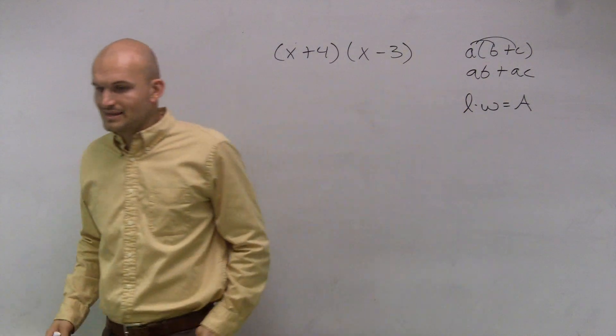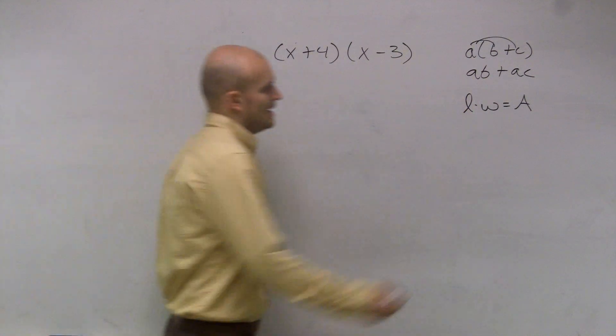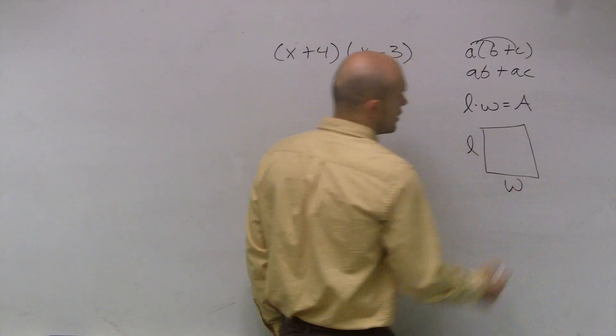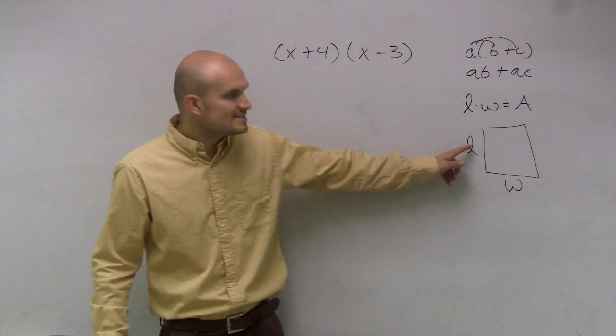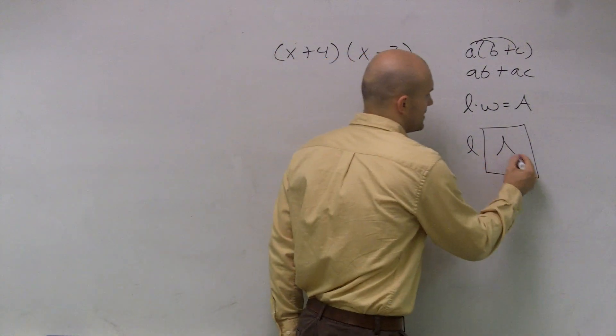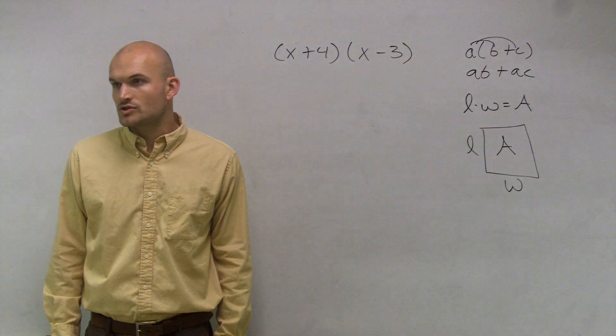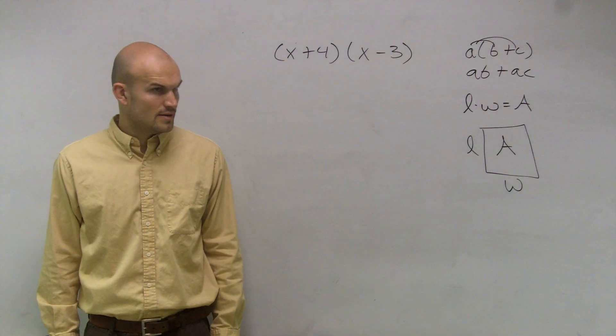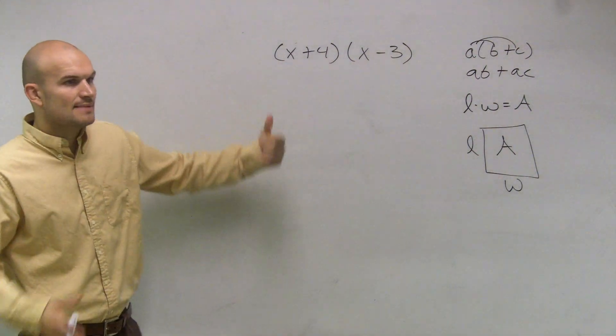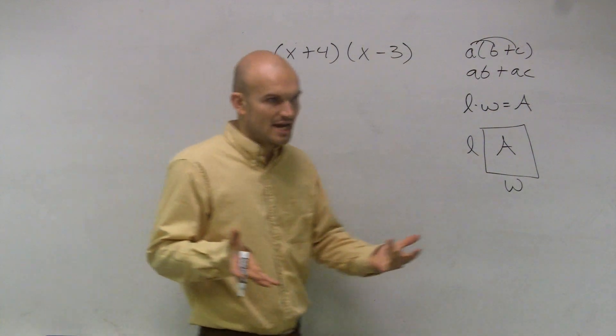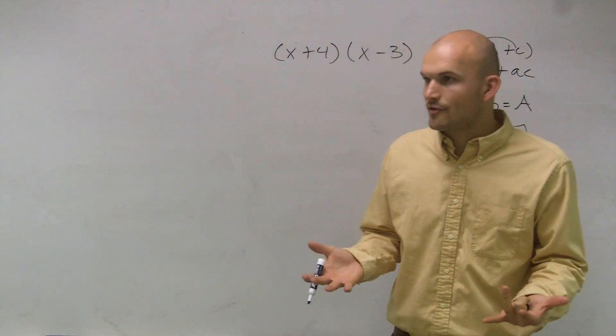So we have length times width equals area, right? And one thing I want you guys to understand is you remember that for a square or a rectangle, if I say length times width, that's going to give me the amount of space inside that rectangular square, correct? So any times we're multiplying two numbers, that's going to give us the area we could say of a rectangle.